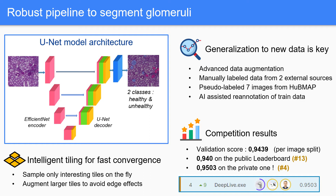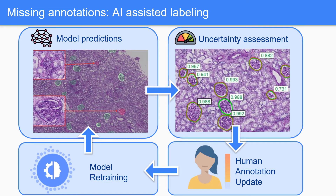Regarding the results, we had a robust validation scheme which enabled us to achieve fourth place on the private leaderboard. It appears that the initial labels have a lot of issues, and this can be a big deal for medical data because it hurts robustness.